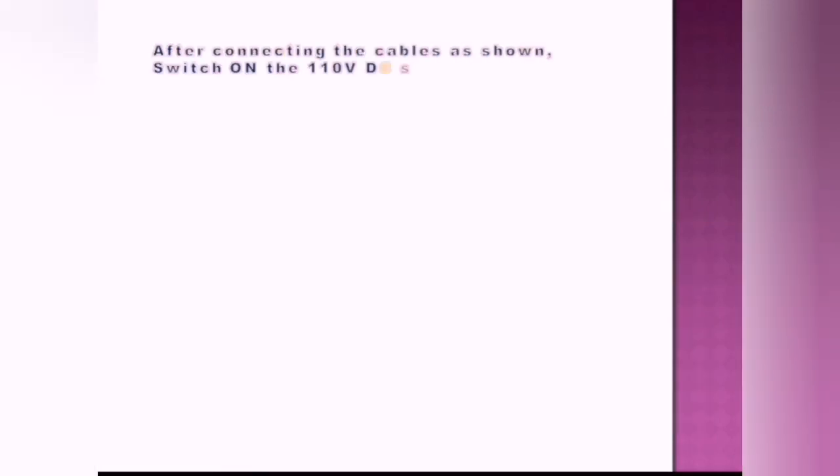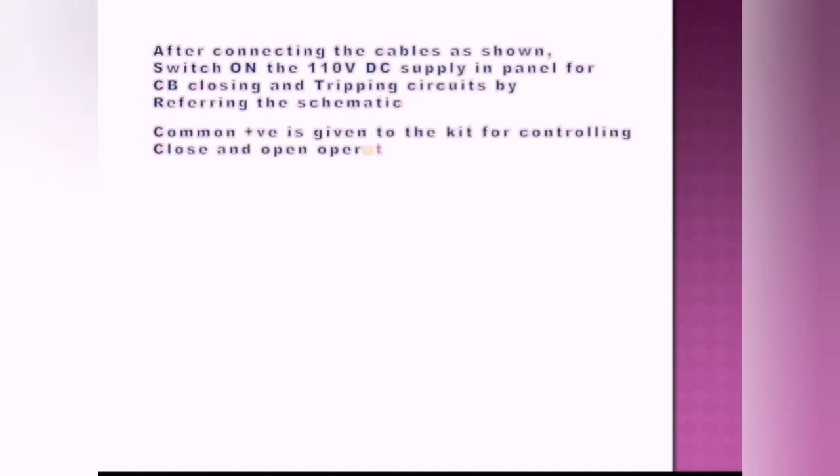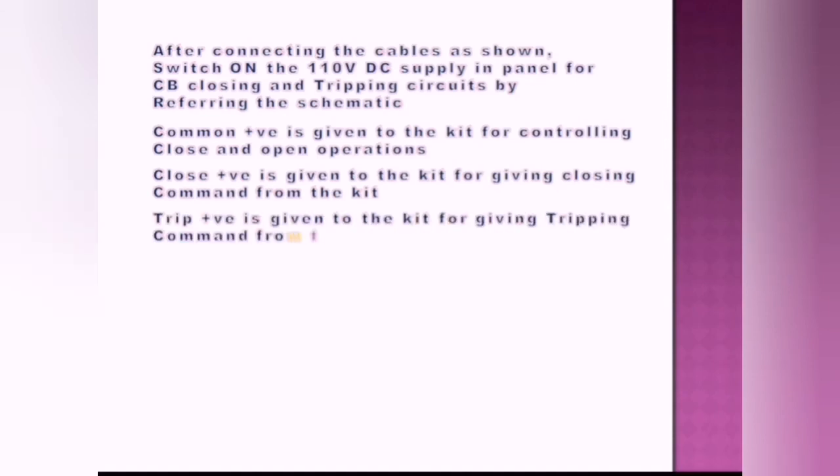After connecting the cables as shown, switch on the 110V DC supply in the panel for CB closing and tripping circuit. By referring the schematic, common positive is given to the kit for controlling close and open operations. Close positive is given to the kit for giving close command, and trip positive is given to the kit for giving trip command.